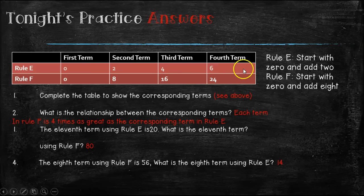So if we were to extend this table out to the 11th term, rule E would be 20. So what is the 11th term? We know that four times is great, so you would have to do 20 times four, which equals 80. And then if we did the eighth term, rule F, which would be the bottom one, would be 56. So we would have to do 56 divided by four, which would tell us that rule E is 14.